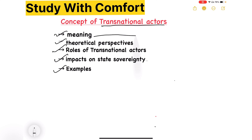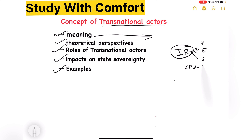अगर हम transnational actors की meaning की बात करें, तो थोड़ी background डिसकस कर लेते हैं। International relation क्या है? कई सारी countries के बीच में जो relation होता है — political, economic, social, cultural। कई सारे लोग पूछते हैं कि international politics और international relation में क्या difference है? International relation एक broad term है जिसमें हर dimension आ जाता है। International politics केवल एक domain है — जो political dimension की बात करेगा।